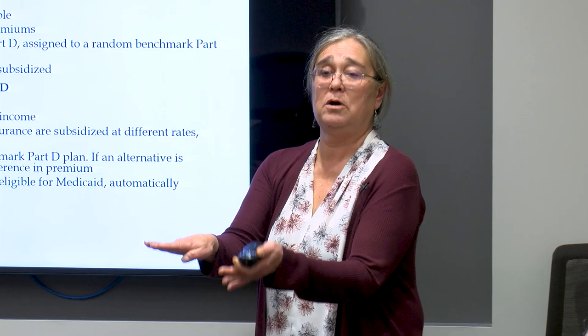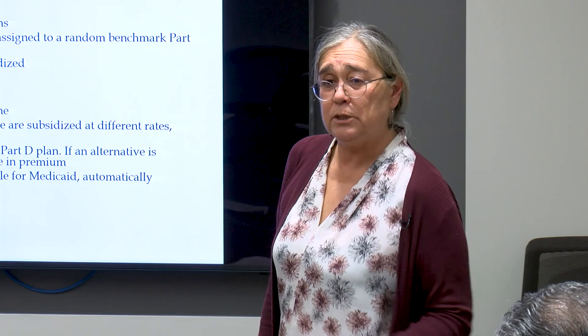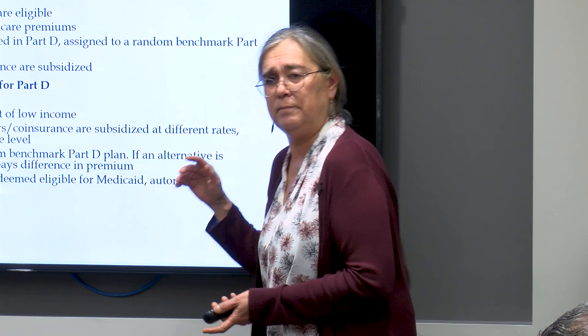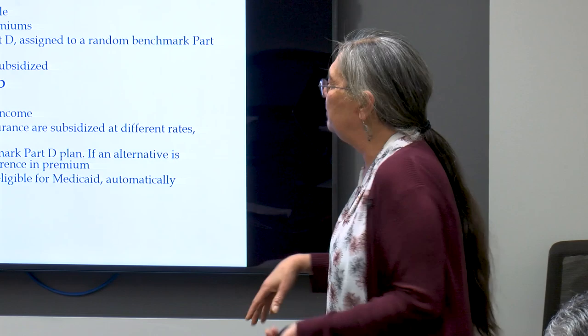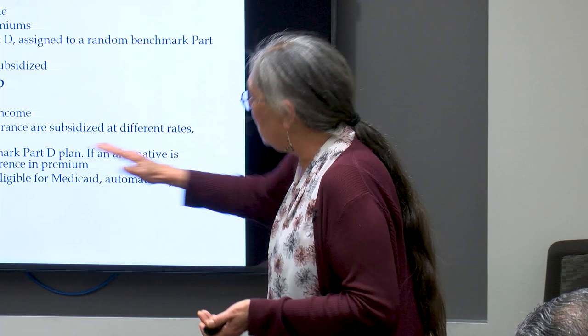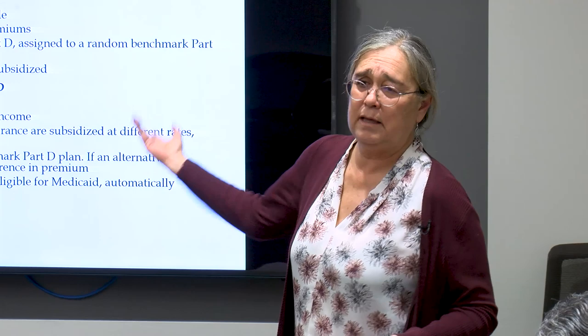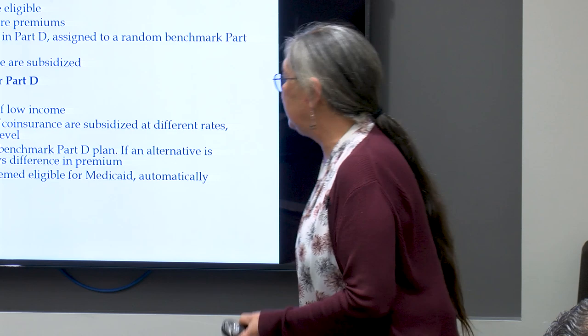Co-pays and coinsurance are subsidized for the duals. There are also low income subsidies for Part D if they're not dual eligible but still around 135% above the federal poverty level. That has different levels depending on income and usually covers premiums and co-pays and coinsurance at different rates. These are also assigned to a random Part D plan, but if they ever choose an alternative, they pay the difference in premium. Most dual eligibles among the elderly are in nursing homes — that's the big expense. They spend down their assets.